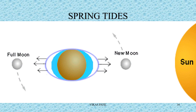As the Earth, moon, and sun relate to each other — as the moon revolves around Earth — there are times like new moon and full moon when the Earth, sun, and moon come in a straight line. The sun's gravitational pull, though much less than the moon's on Earth, when combined with the moon's gravitational pull in the same line, causes water levels to rise more than normal. This is known as a spring tide.